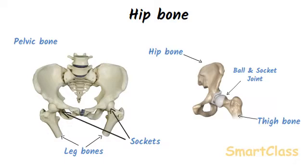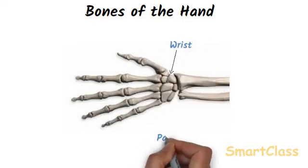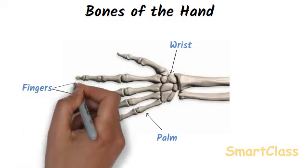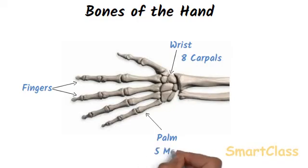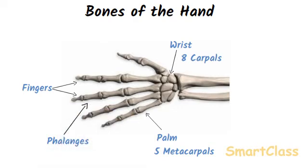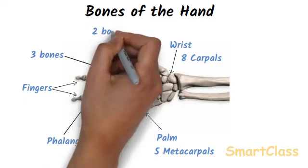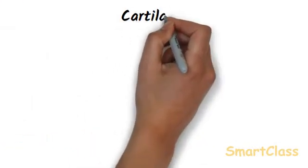Our hand is made up of three parts: the wrist, palm, and fingers. The wrist consists of eight small bones known as carpals. The palm of the hand is composed of five longer bones called metacarpals. The fingers are made of jointed bones called phalanges. There are three bones in each finger, but the thumb has only two bones. The wrist bones form movable joints with the palm bones, and the finger bones form movable joints among themselves. There are five fingers in our hand, including the thumb.